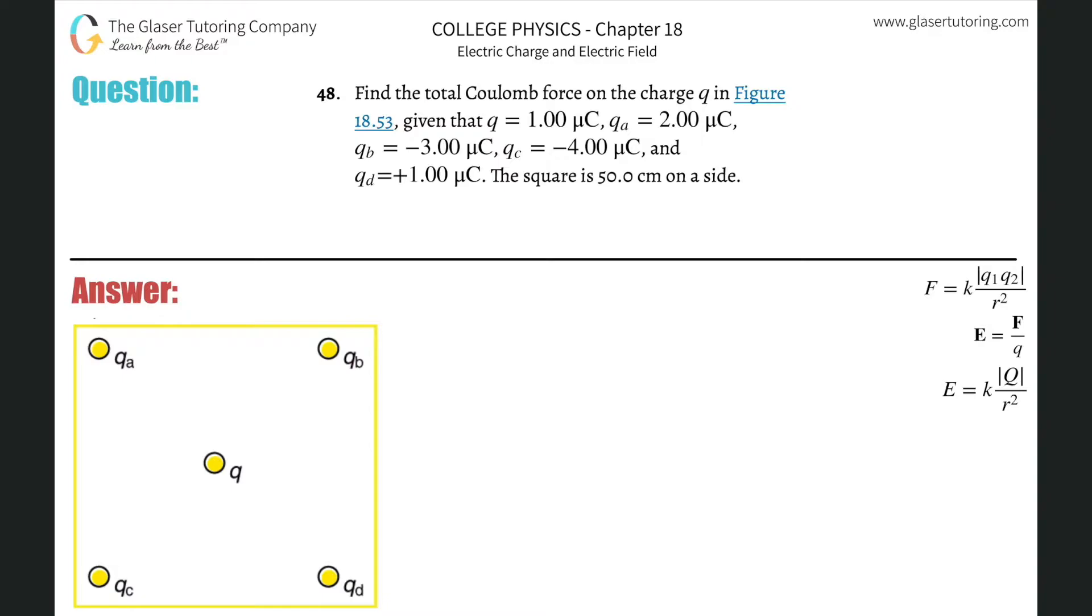Number 48. Find the total Coulomb force on the charge Q in figure 18.53, given that Q is 1 microcoulomb, QA is 2 microcoulombs, B is negative 3, C is negative 4, and D is 1, and the square is 50 centimeters on a side.